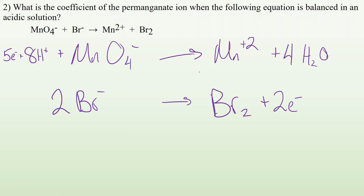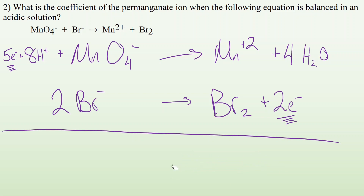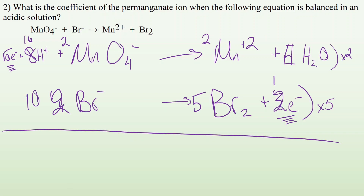Now to combine them: if I'm gaining five electrons in one half-reaction but only losing two electrons in the other, that's not an even exchange. The electrons lost have to equal the electrons gained. What number do two and five have in common? I can get both to ten. I'll multiply the top half-reaction by two and the bottom by five. After distributing: 10e⁻, 16H⁺, 2MnO₄⁻ on one side; 2Mn²⁺ and 8H₂O on the other. For the bromide: 10Br⁻ → 5Br₂ + 10e⁻. Now the ten electrons on the left cancel the ten electrons on the right.